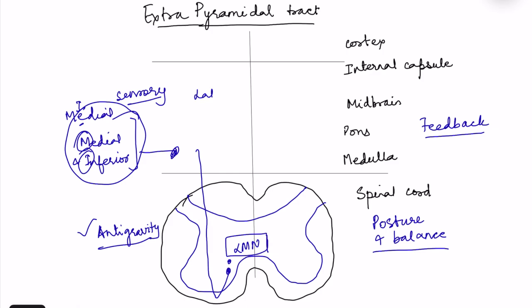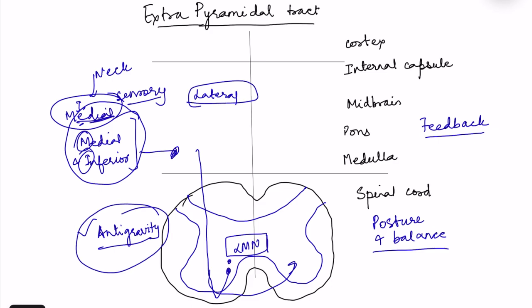Specifically, the medial vestibulospinal tract supplies the cervical spinal cord — controlling neck movements — and projects bilaterally with crossing. The lateral vestibulospinal tract supplies the antigravity muscles of the limbs.